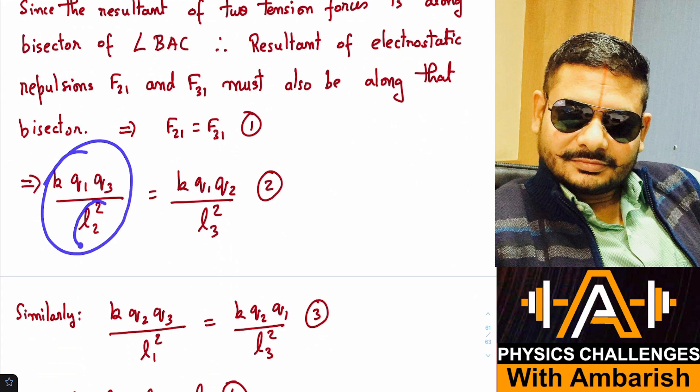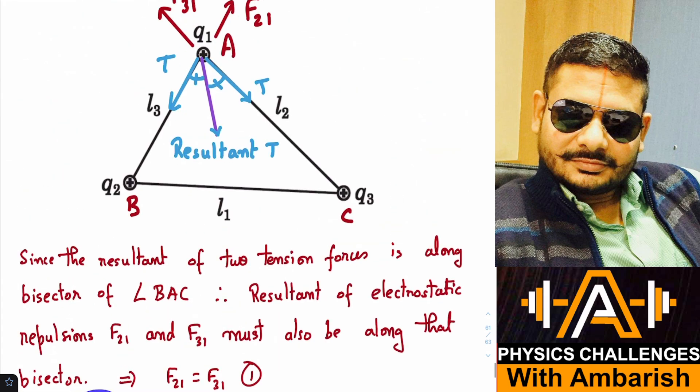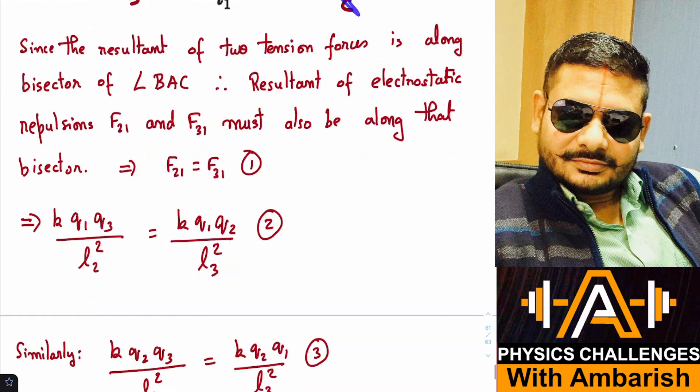So K Q1 Q3 upon L2 square must be equal to K Q1 Q2 upon L3 square. That is product of these charges divided by this distance square is going to product of these two charges divided by this distance square. So if you want, you can cancel off Q1 on both sides, K on both sides. So neat little equation Q3 by L2 square is equal to Q2 by L3 square.